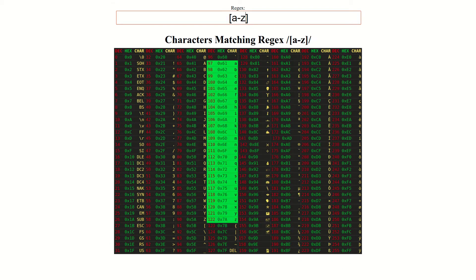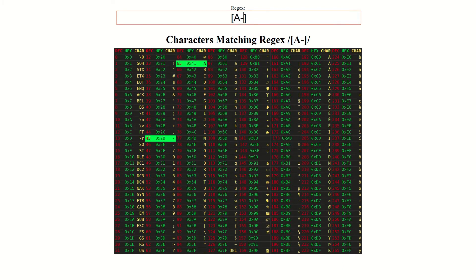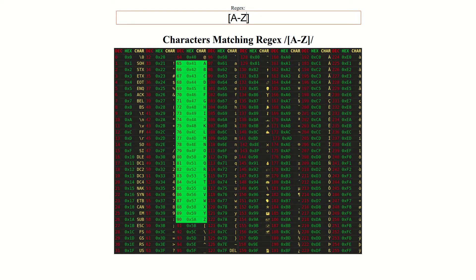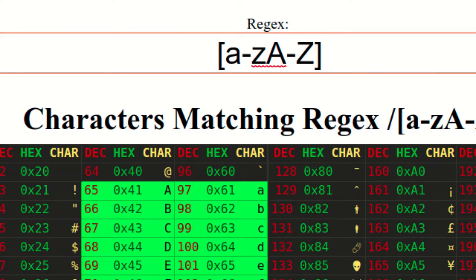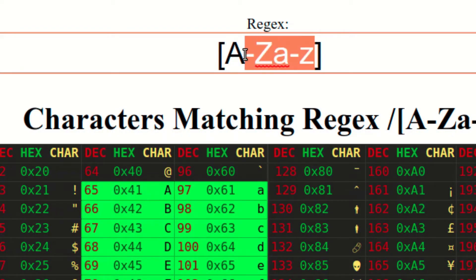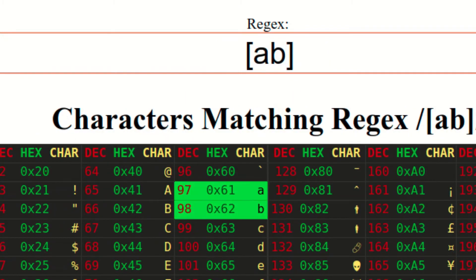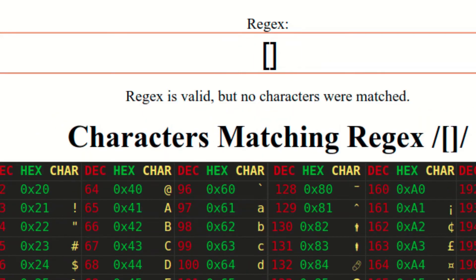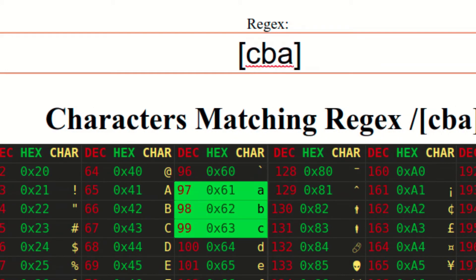However, what about the order in which two different character ranges are specified? In this case, the ordering will have no functional effect on which characters the regex will match. For example, this character class will match exactly the same characters as this character class. Similarly, the ordering of individual characters in a character class has no functional effect when determining which characters a regex will match.